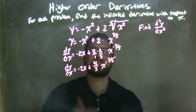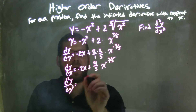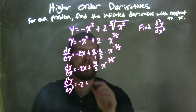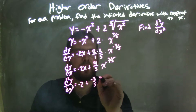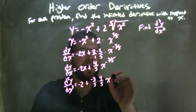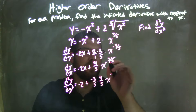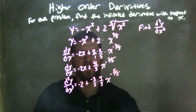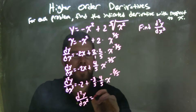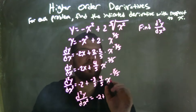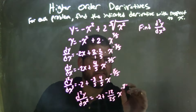Now we need to find the second derivative. So d²y/dx²: using the power rule again, the derivative of negative 2x is just negative 2, plus negative three-fifths times four-fifths times x — and subtracting one whole unit (five over five) from negative three-fifths gives us negative eight-fifths. Multiplying out: negative 3 times 4 is negative 12, and 5 times 5 is 25. So d²y/dx² equals negative 2 plus negative 12 over 25, x to the negative eight-fifths power.